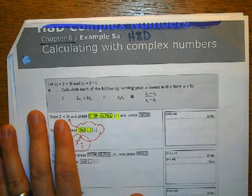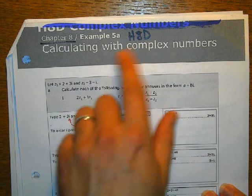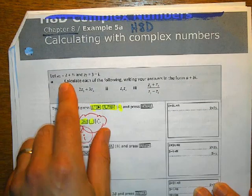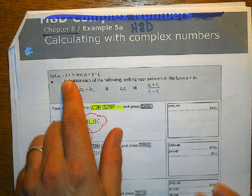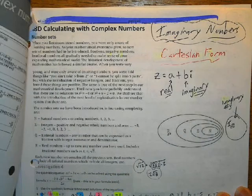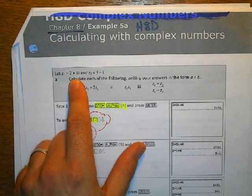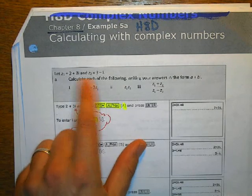All right, so we're going to do the calculator steps for H8D. You have this handout we got in class, it should be attached to the back of this handout. So first I need to store Z1 and Z2, okay?